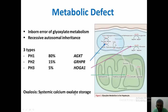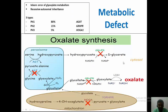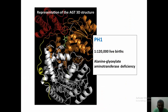Summarizing the different causes of primary hyperoxaluria: the most common cause is deficiency of the enzyme AGXT, which is present in liver peroxisomes. Type 2 is due to GRHPR deficiency, and type 3 is a rare variant caused by deficiency of HOGA1. These are the three types of primary hyperoxaluria.